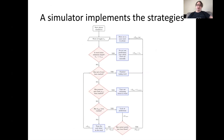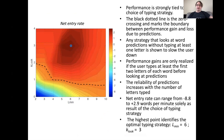We implement a simulator, depicted in the following flow chart — for details, please see the paper. This analysis allows us to understand the effect of word prediction differently than direct control experiments. For instance, we find that performance is strongly tied to the choice of typing strategy. The black dotted line marks the zero crossing — the boundary between performance gain and loss due to word predictions. Any strategy that looks at word predictions without typing at least one letter is shown to slow the user down. Performance gains are only realized if the user types at least the first two letters of each word before looking at predictions. The net entry rate from word predictions can range from negative 8.8 words per minute to plus 2.9 words per minute solely as the result of the typing strategy the user is using.